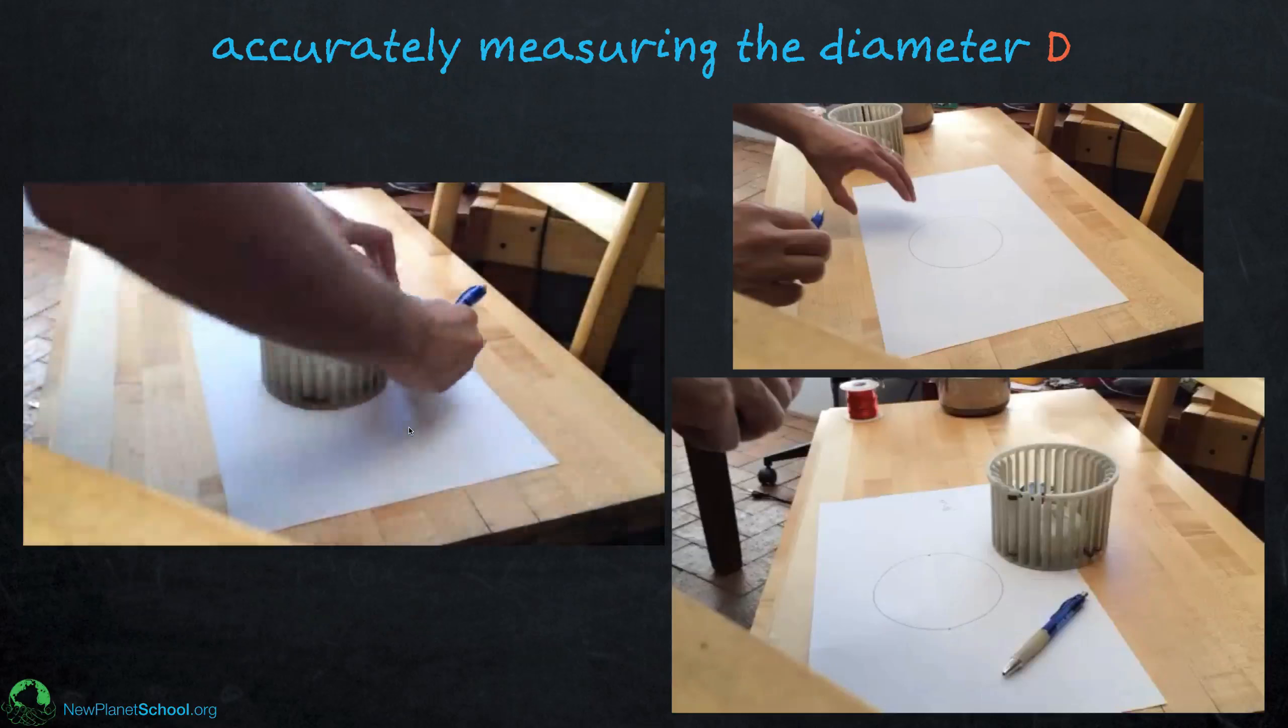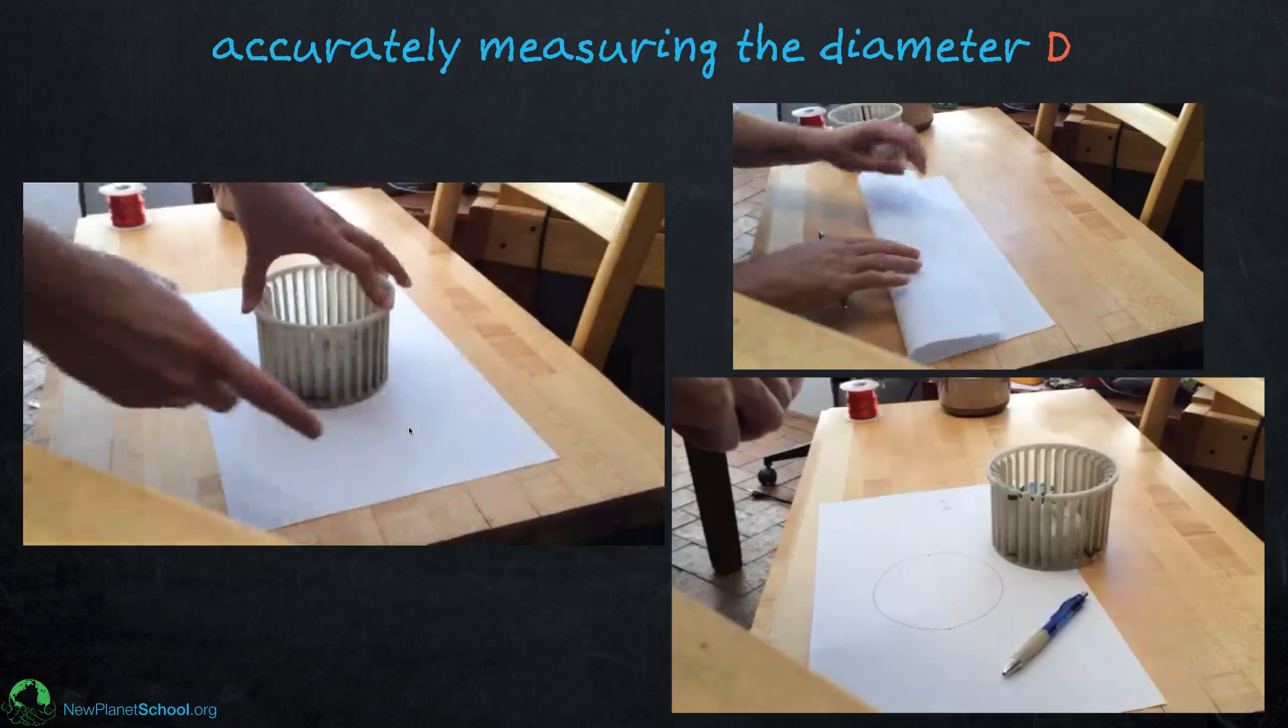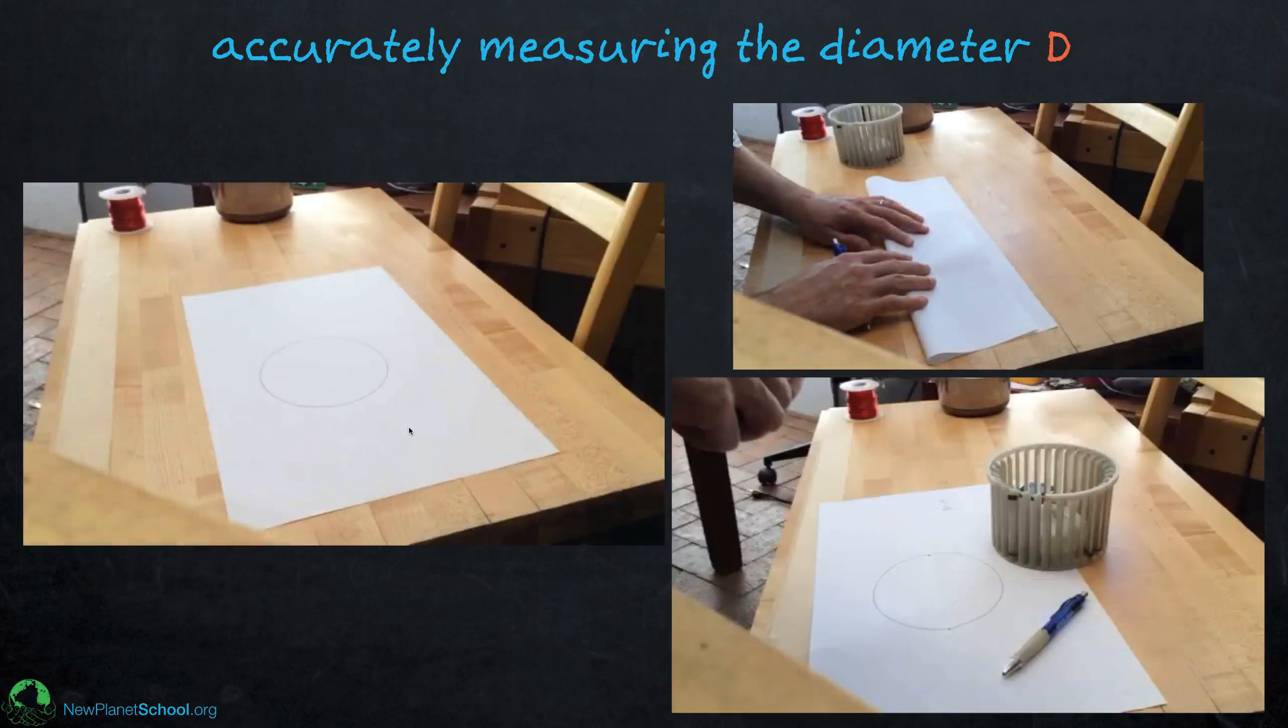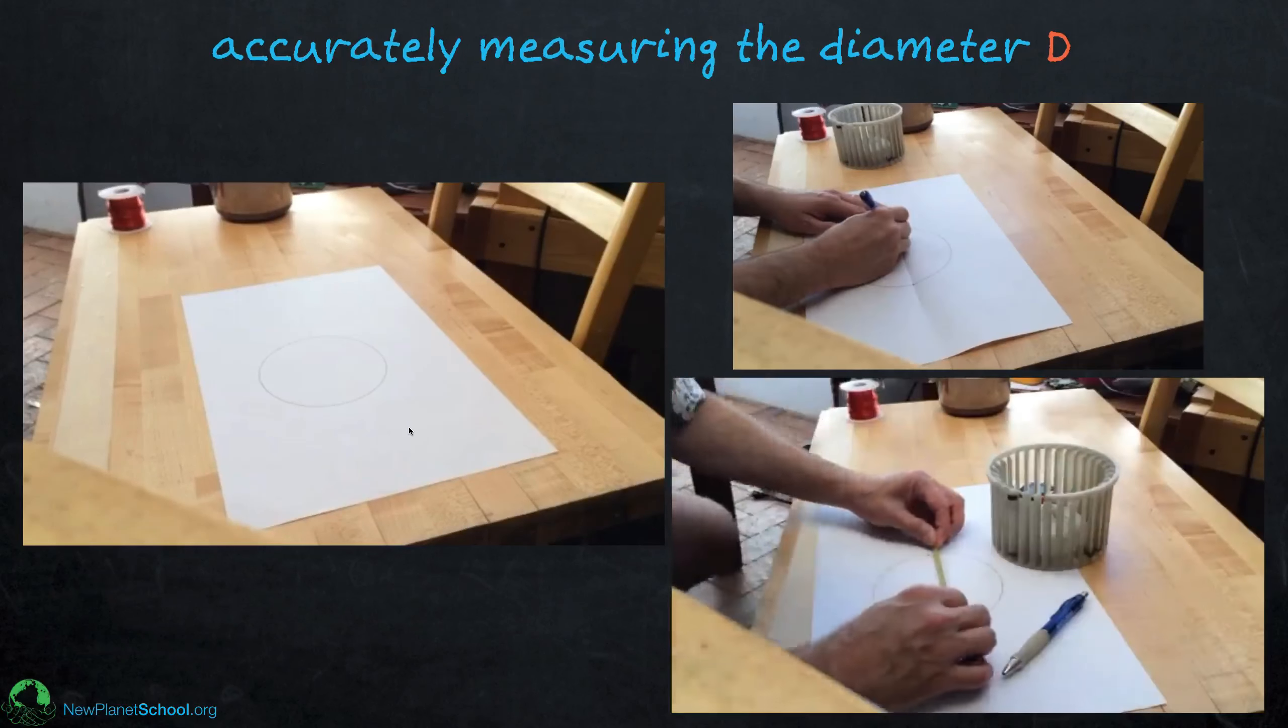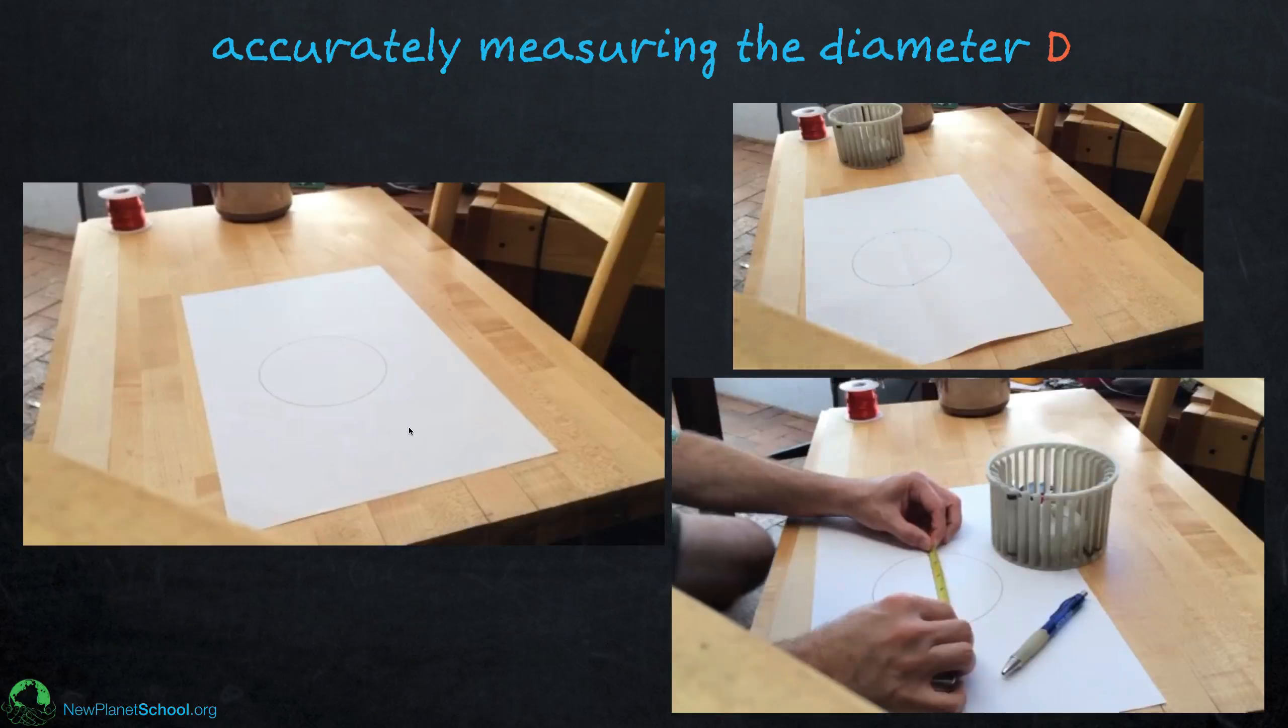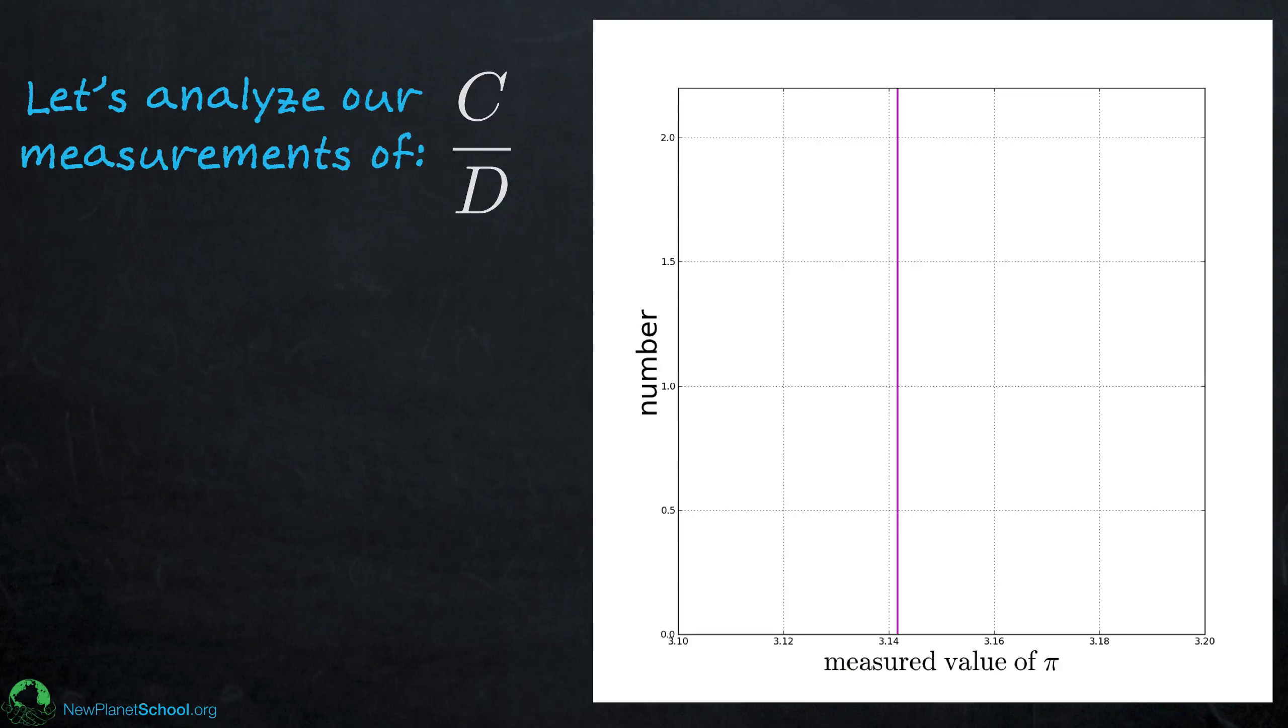And then once we had the circle drawn, we would take the piece of paper and fold it so that the circle exactly overlapped. You have to look through the paper to see when the circle overlaps itself. Fold it, and then you could mark either side of the circle. And then you just measure the straight line distance exactly between those two points and get a very accurate measurement for the diameter. Pretty simple. Once you've done that, you just divide them and see what you get.